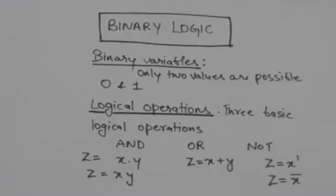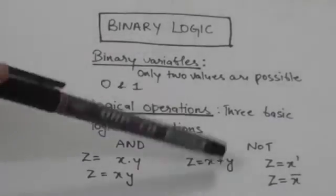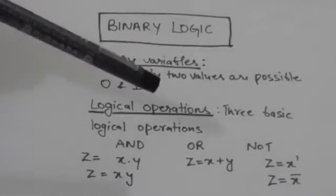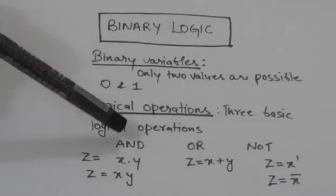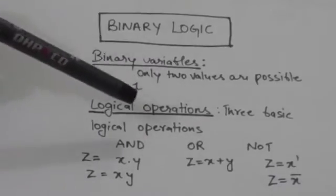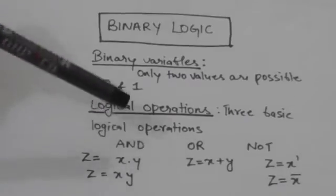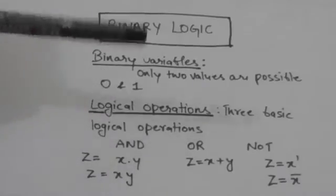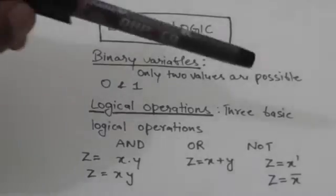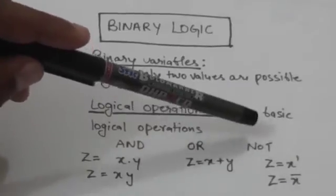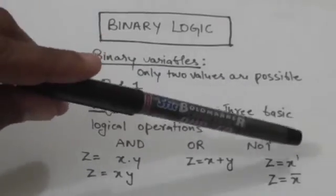The three basic logical operations which can be performed on binary variables are: AND operation, OR operation, and NOT operation. The result of these operations will be either 0 or 1. AND operation is represented by the dot operator, or the absence of an operator. OR operation is represented by the plus operator. NOT operation is represented by prime or bar.